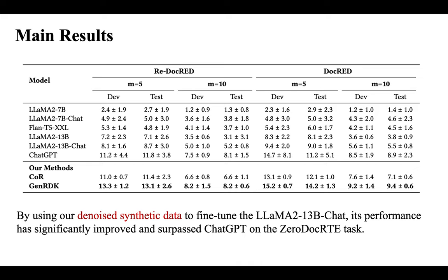Here is the main result of our framework. We find that by using our denoised synthetic data to fine-tune the LLaMA-2 13 billion chat model, its performance has significantly improved and surpassed ChatGPT on the zero-shot document-level relation triplet extraction task.